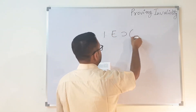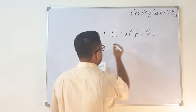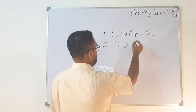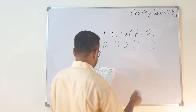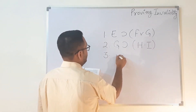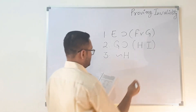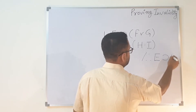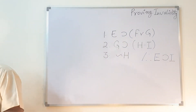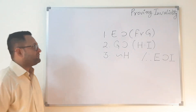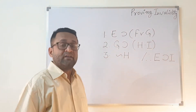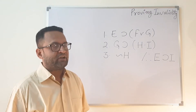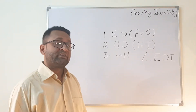Here is the question from your book. The first premise is E → (F ∧ G). The second premise is G → (H · I). The third premise is ¬H. The conclusion is therefore E → I. We need to prove the validity or invalidity of this argument — and since this is a question on proving invalidity, we check that first.